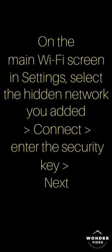Select the 'Connect even if this network is not broadcasting' checkbox and then select Save. On the main Wi-Fi screen in Settings, select the hidden network you added, connect, and enter the security key, then select Next.